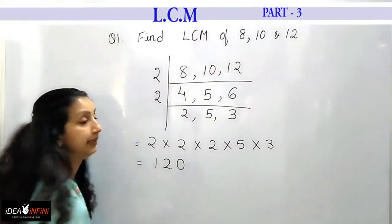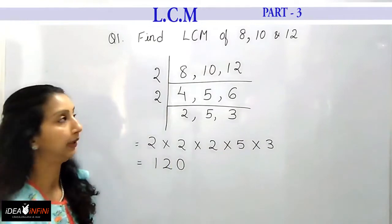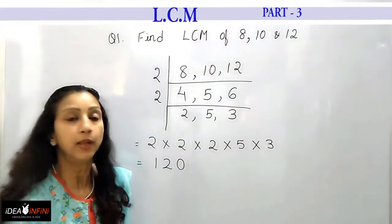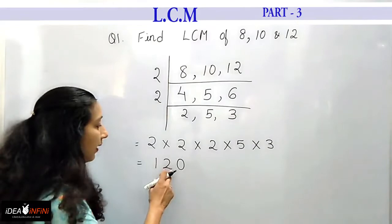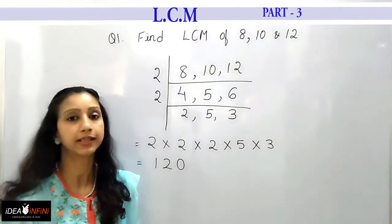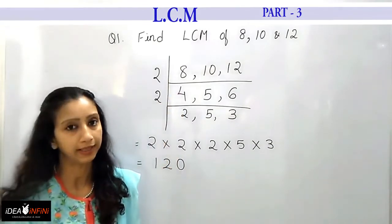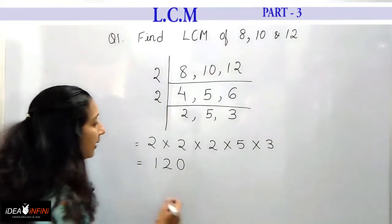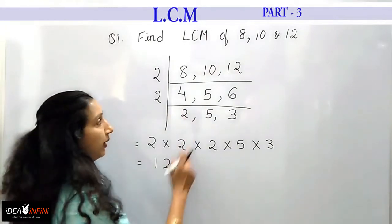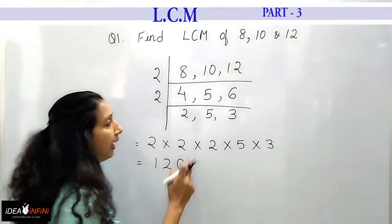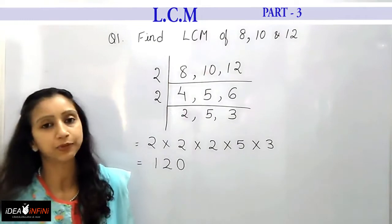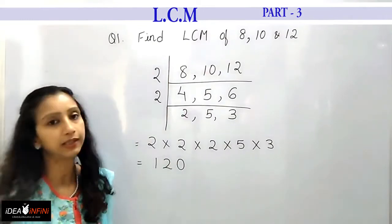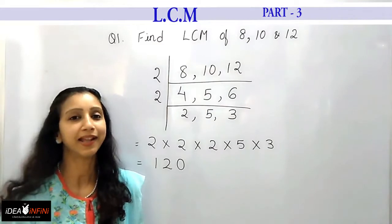Multiplying: 5 × 3 = 15, 15 × 2 = 30, 30 × 2 = 60, 60 × 2 = 120. So 120 is the least common multiple of 8, 10, and 12. We can verify: 120 ÷ 8, 120 ÷ 10, and 120 ÷ 12 all give whole numbers, confirming 120 is the correct LCM.